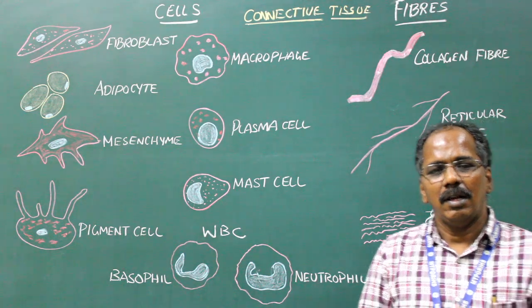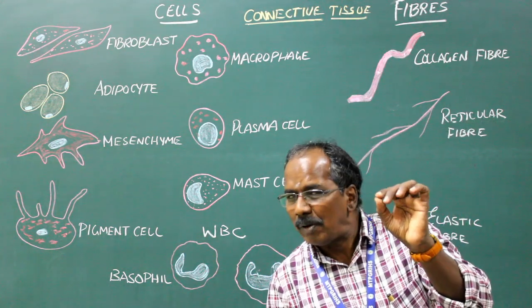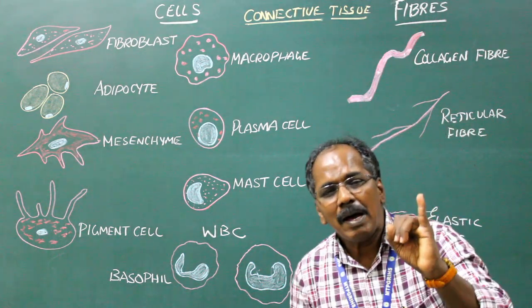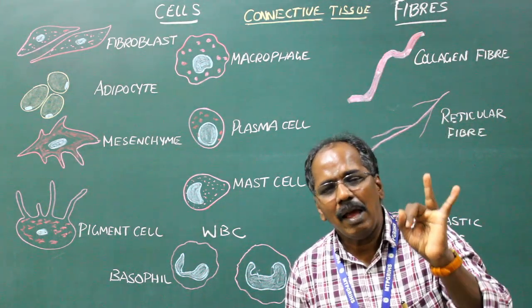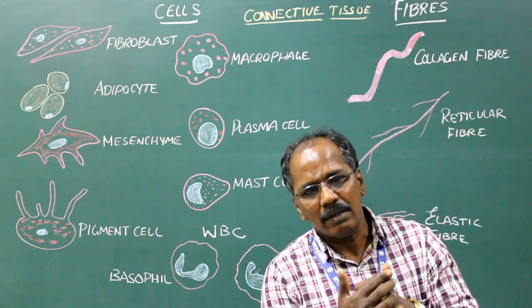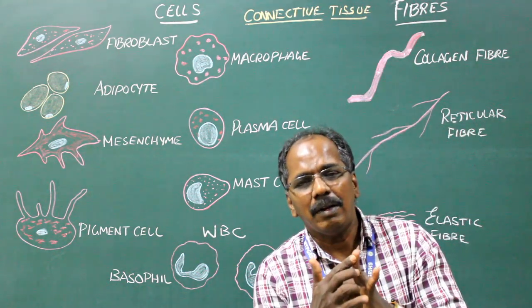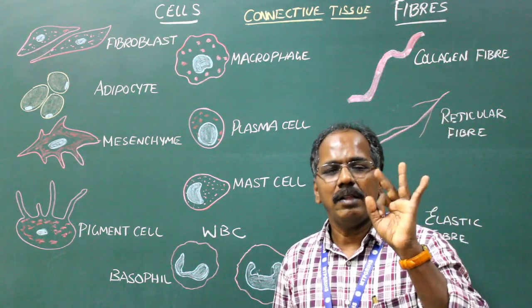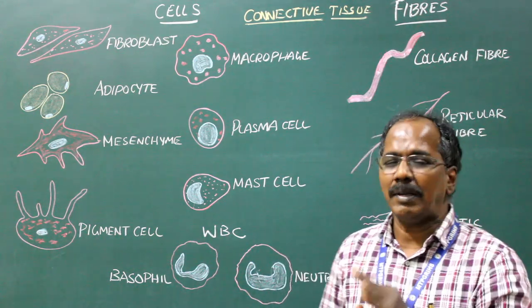Mast cell: They are small round or oval shaped cells that secrete heparin, histamine and serotonin. Heparin is an anticoagulant. Histamine is produced during allergic reactions and serotonin is a neurotransmitter.